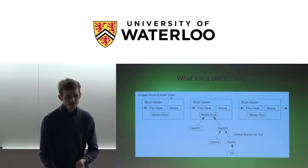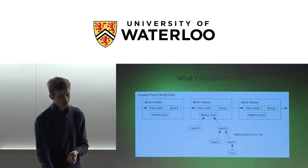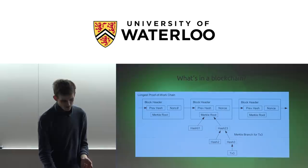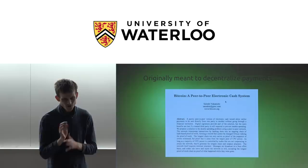Each block, in order to be considered valid, has to have one of these mathematical puzzle solutions attached to it. A block gets built and points to a previous block, so we have this chain of blocks that keeps growing over time. If there's a disagreement — two people building two blocks on top of the same block — eventually someone builds on top of one of them, and if there's a conflict, the longest chain wins.